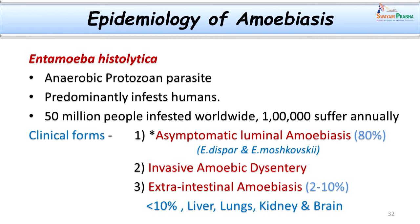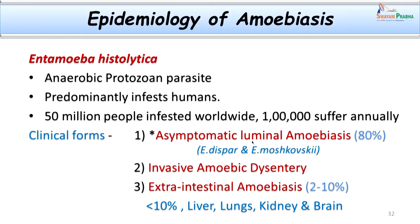Amoebiasis is caused by Entamoeba histolytica, a protozoan parasite. It is anaerobic in nature and predominantly infests humans, most of whom are asymptomatic carriers. Worldwide, about 50 million people are estimated to be infested, about 100,000 suffer annually, and 50,000 of them die. This underlines that it is a common disease requiring timely diagnosis, specific treatment, and prevention.